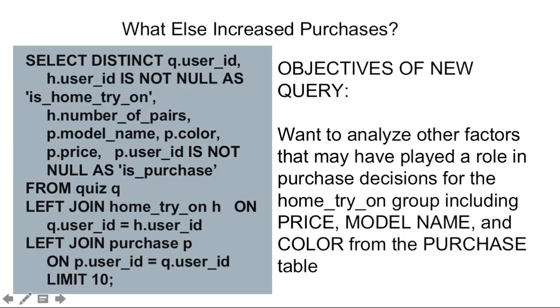I also want to see what other factors were involved in making purchase decisions. What else increased purchase? So I modified my new query instead of not just selecting the user ID table columns from the different tables from home try-on and from number pairs. I wanted to look at model name, color, price as well to see if this was a factor in making purchase decisions.